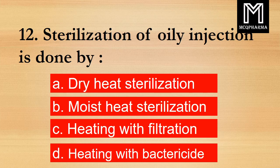Question number 12. Sterilization of oily injections is done by? Option A: Dry heat sterilization. B: Moist heat sterilization. C: Heating with filtration. D: Heating with bactericide. Correct answer: Option A, Dry heat sterilization.